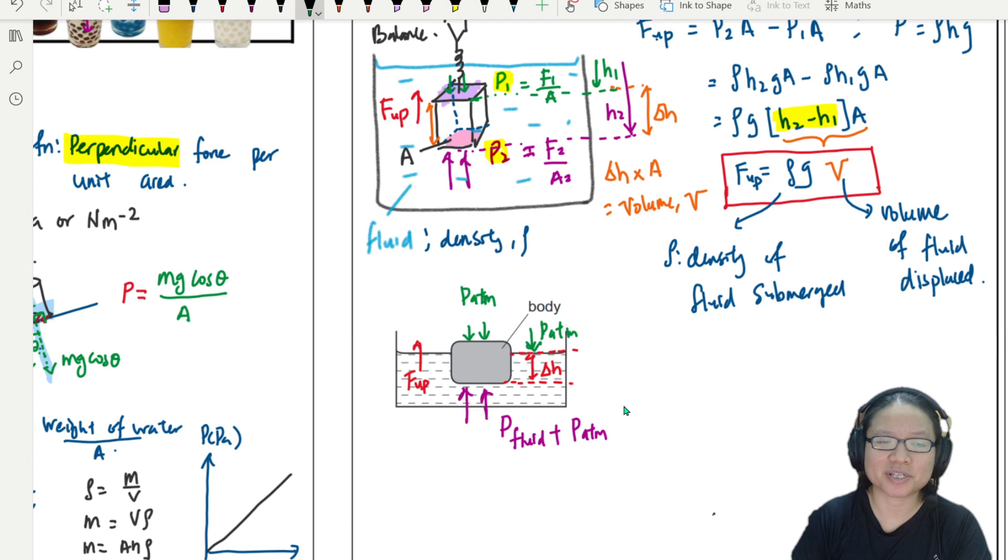So, your pressure difference is actually due to your fluid, the pressure of the fluid down the H. So, then the volume that we will take is actually this volume, whatever this shaded volume is.